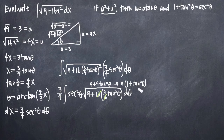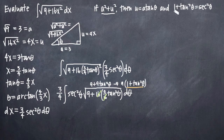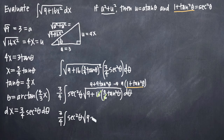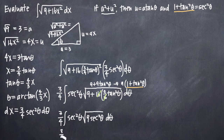Now our trigonometric identity comes into play. We have 1 plus tangent squared theta inside our square root, and we substitute secant squared theta using the identity 1 plus tangent squared theta equals secant squared theta. So inside the square root we have 9 times secant squared theta. Taking the square root gives us 3 times secant theta. Pulling the 3 out front multiplies the 3 fourths to give us 9 fourths times the integral of secant squared theta times secant theta d theta.